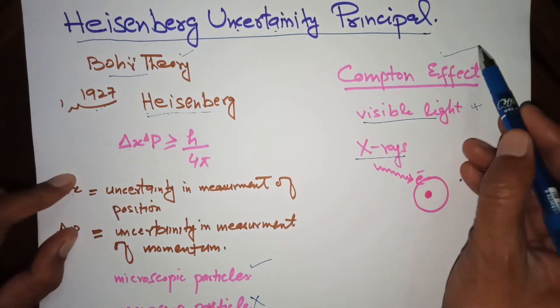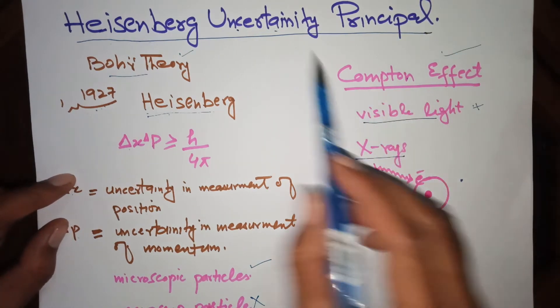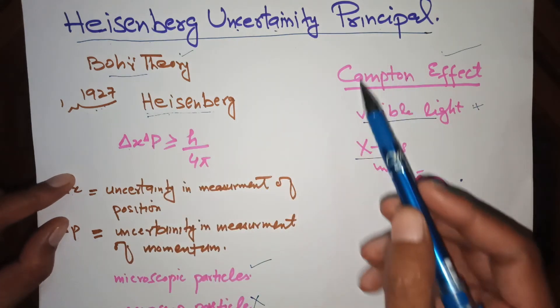Compton effect can explain the Heisenberg Uncertainty Principle in a better way.